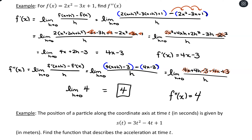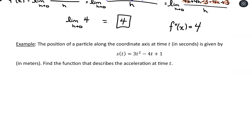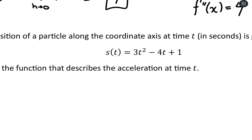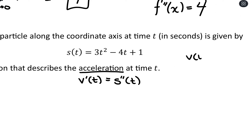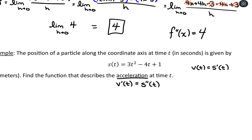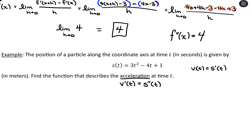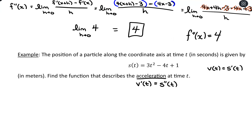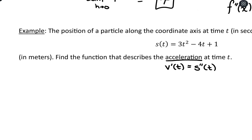That's just applying the same rule a second time. If we wanted the third derivative, we'd apply it again. In terms of word problems, this is where acceleration comes in. Acceleration is the derivative of the velocity function, which is the second derivative of our position function. The velocity function equals the first derivative of our position function. Let's say the position of a particle along the coordinate axis at time t in seconds is given by s(t) = 3t² minus 4t plus 1 in meters — find the function that describes the acceleration at time t.